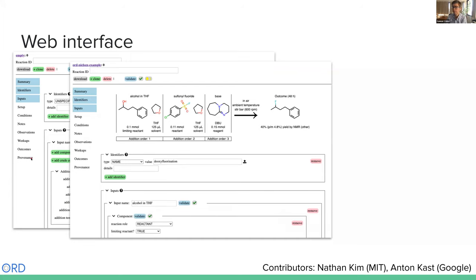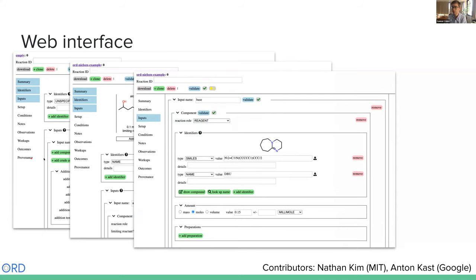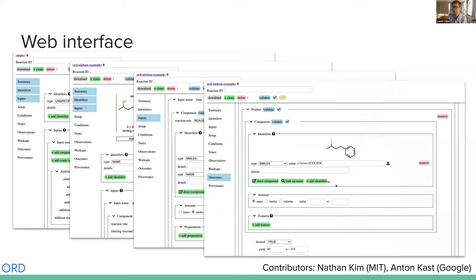If you have a populated example, you can see a reaction summary at the top. Scrolling down, you can define SMILES identifiers, name identifiers, then capture the amounts added in a structured format. We capture outcomes and products as well — entering what was observed, how it was quantified, and what the summary yield, purity, and selectivity statistics were.